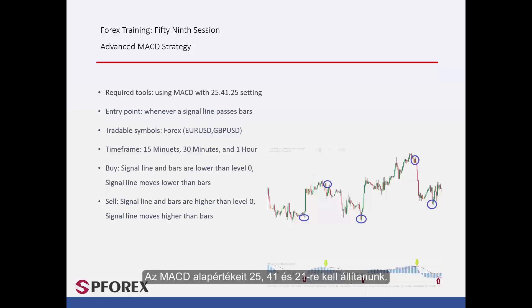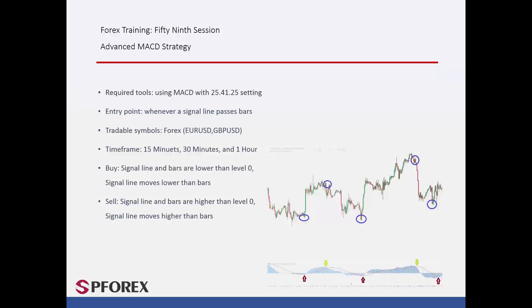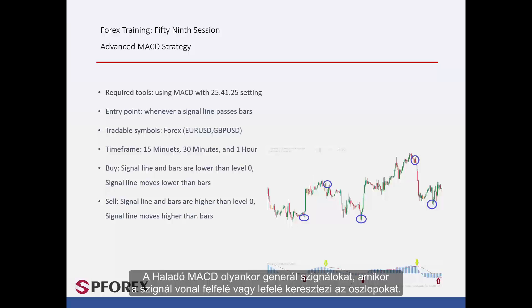MACD property values should be 25, 41, and 21. Advanced MACD generates signals whenever the signal line crosses the bars towards the top or bottom.